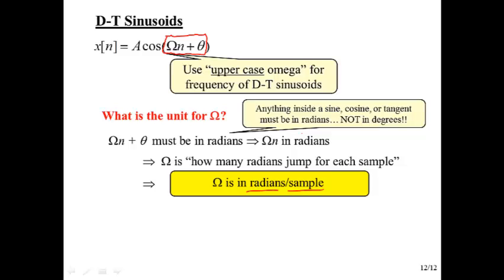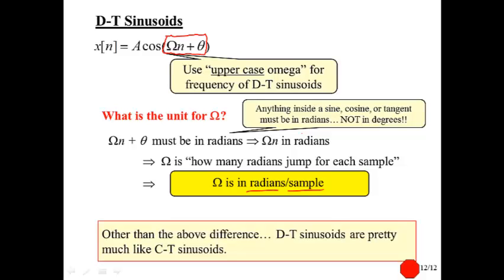You may be familiar with the frequency of continuous-time sinusoids being in radians per second. There, it's a rate at which the angle is changing. Here, it's how much, it's still a rate, but it's a discrete rate. How many radians does it change for each sample change? We'll stop there for this video.